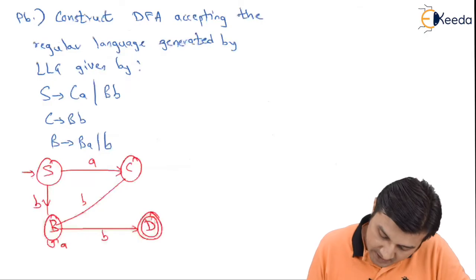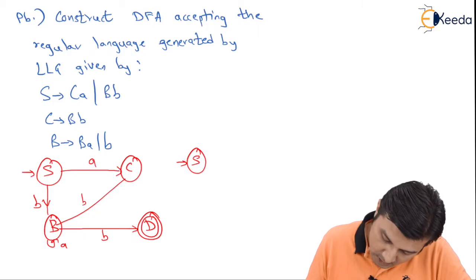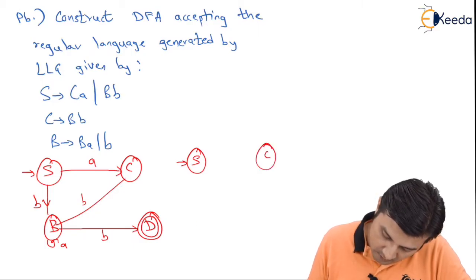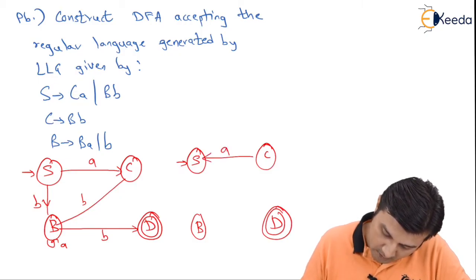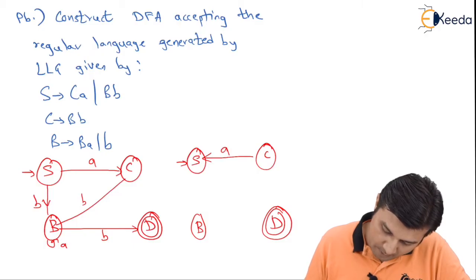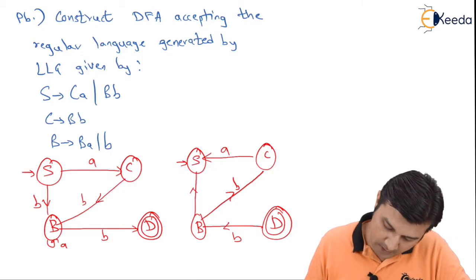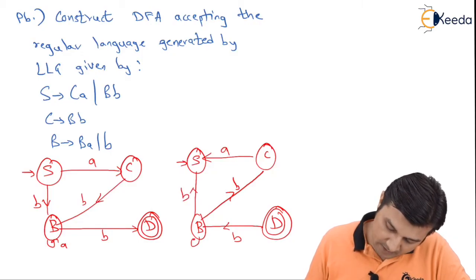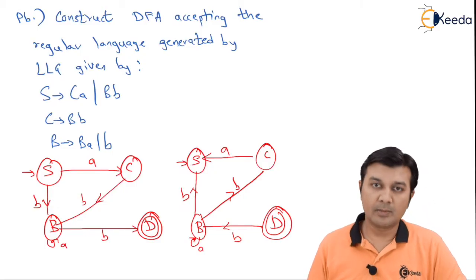So let us reverse the direction. For that I need to draw the states again, so that is my S, that is my C, my B and my D. After reversing I have A coming over here, my B which was coming down will go up, this comes over here on B, this goes up on B, A on reversing does not make any change and that completes the reversing.